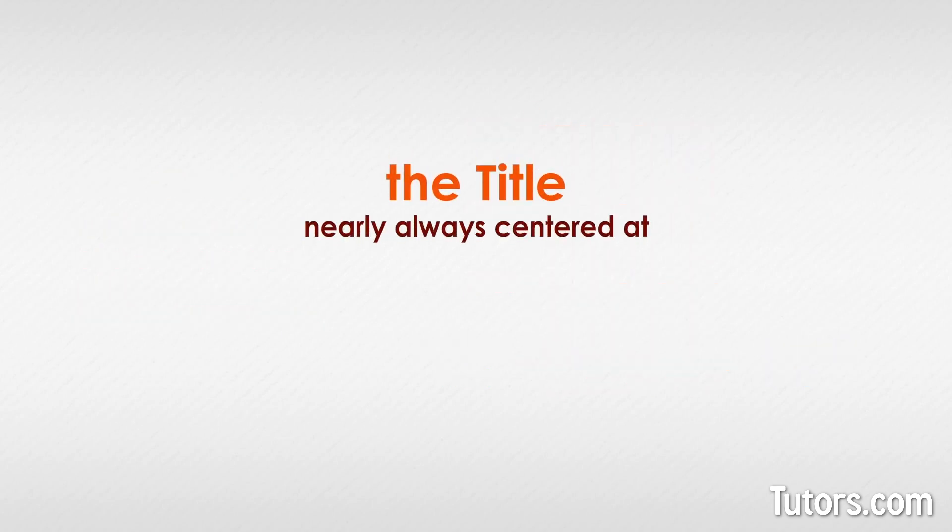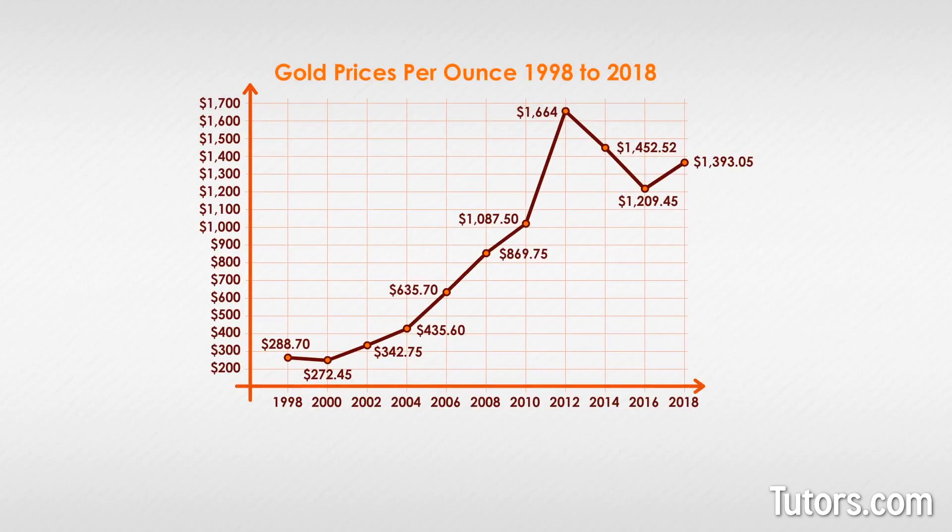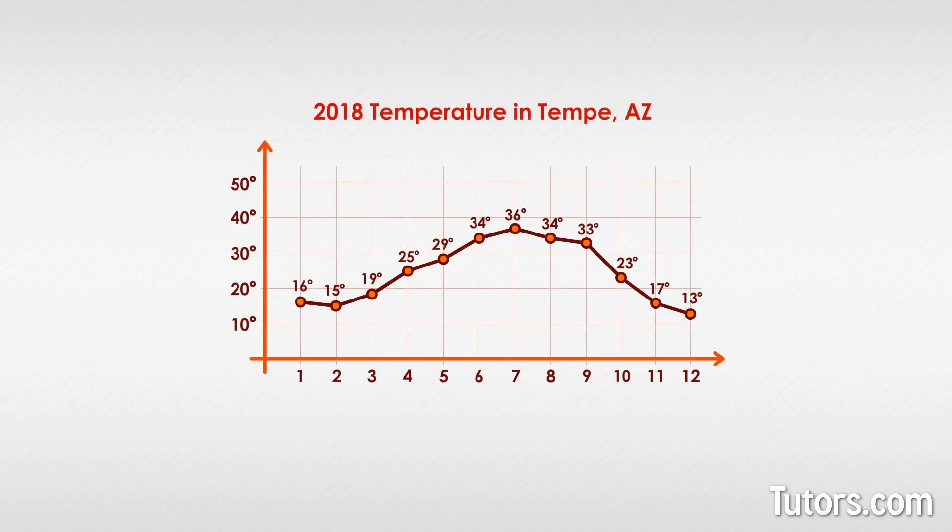A line graph has a title, nearly always centered at the top and above the graph. The title explains what the two axes are showing. Gold prices per ounce 1998 to 2018, or 2018 temperatures in Tempe, Arizona.